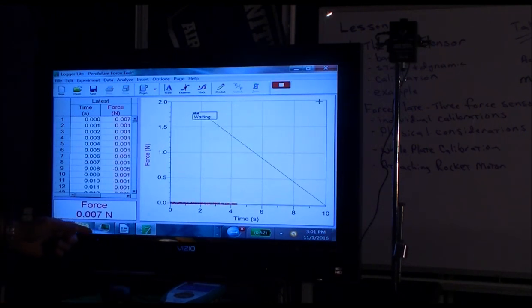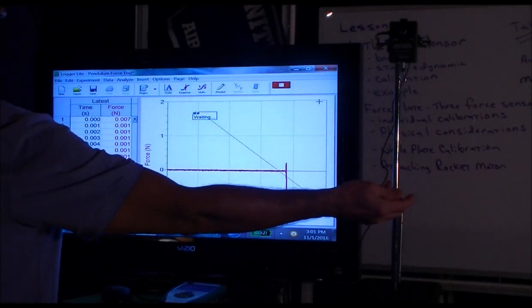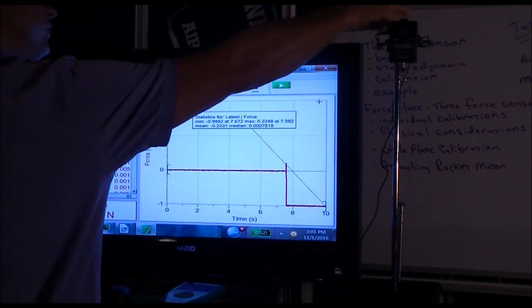So even though we know that there's 0.98 newtons hanging there, it's measuring zero because we've redefined that to be zero. And then if we pick it up, then that's negative 0.98.